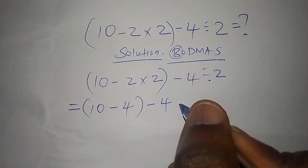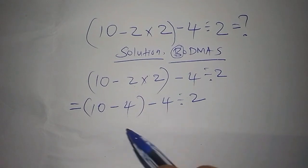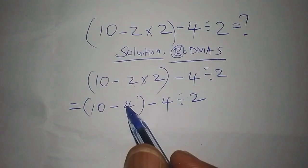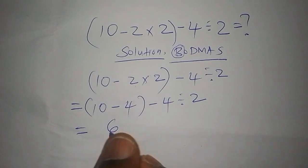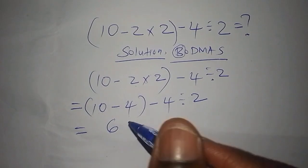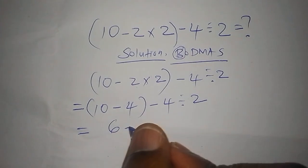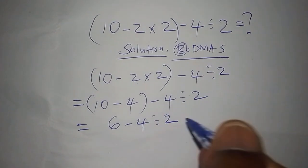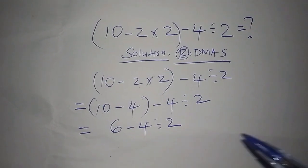We shall now work out this other bracket—that is 10 subtract 4. And 10 subtract 4, we shall have 6. So from there the bracket is now done. We shall say 6 subtract 4 then divide it by 2. Now you can see the numbers are now beginning to become a bit smaller.